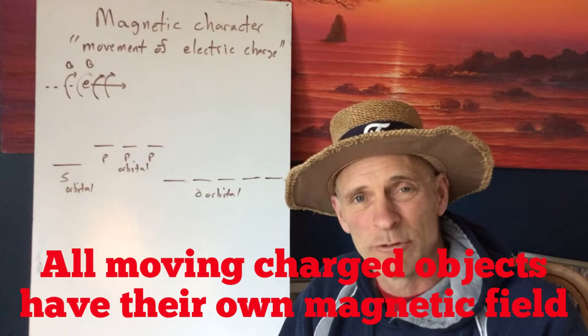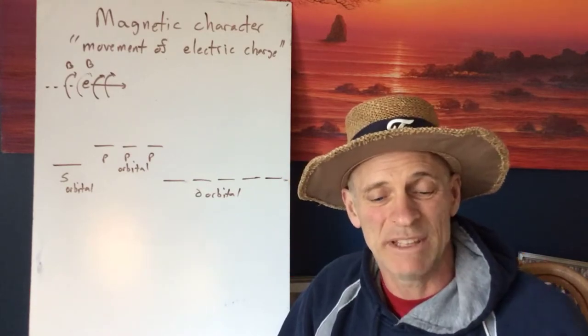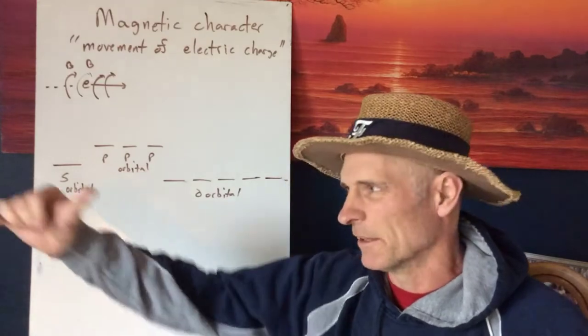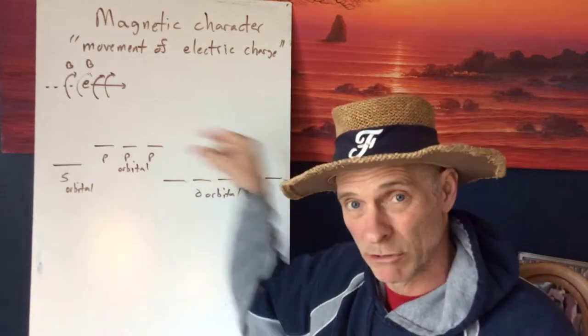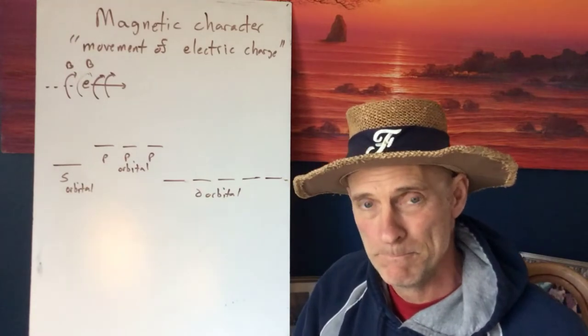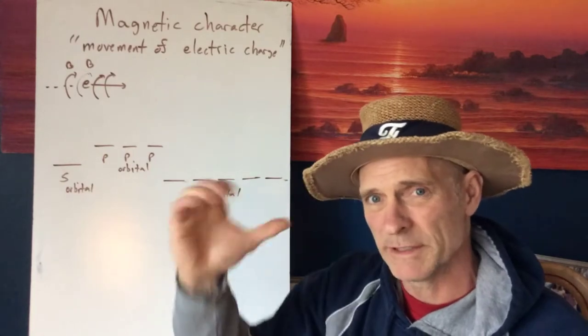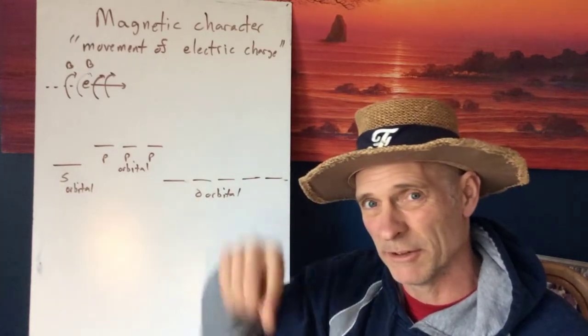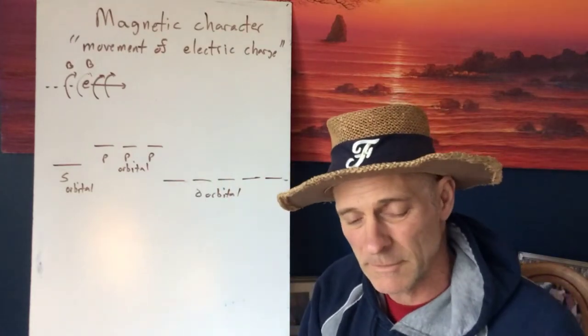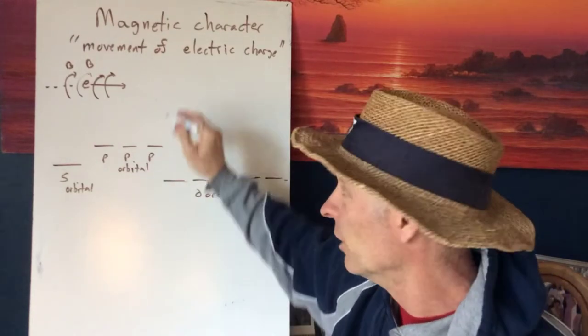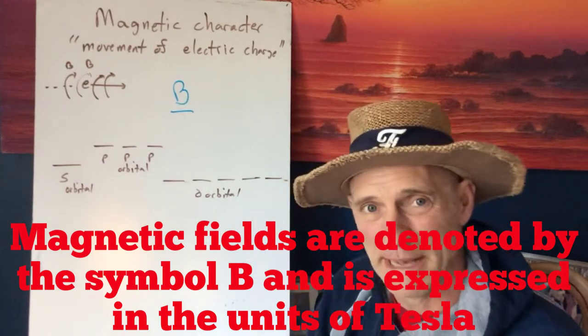Any moving electric charge has its own magnetic field. So, if we had an electron screaming by us from left to right, maybe going across your board, then that moving electron, surrounding that moving electron in a circular pattern would be a magnetic field. A magnetic field is denoted with the symbol B.